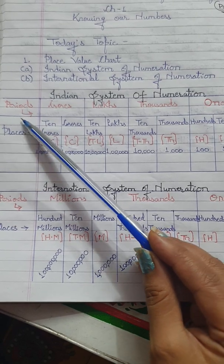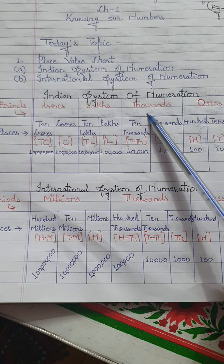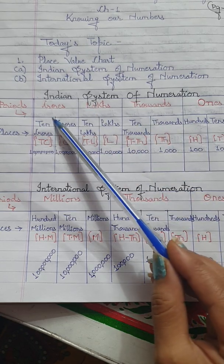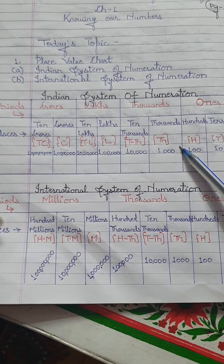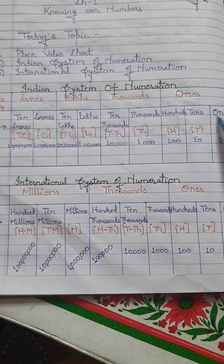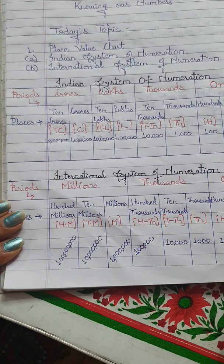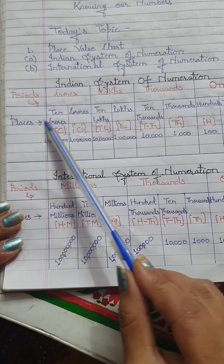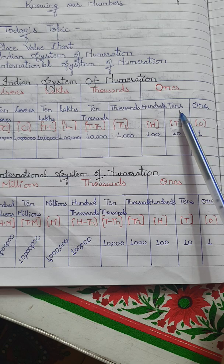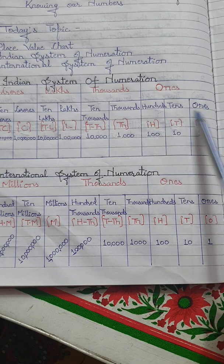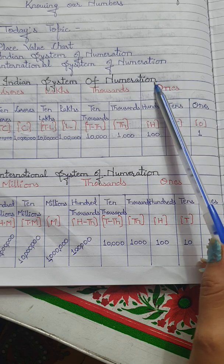I am beginning with periods. In the Indian system, it is divided into 4 periods: ones, thousands, lakhs, and crores. The ones period is further divided into 3 places: ones, tens, and hundreds.